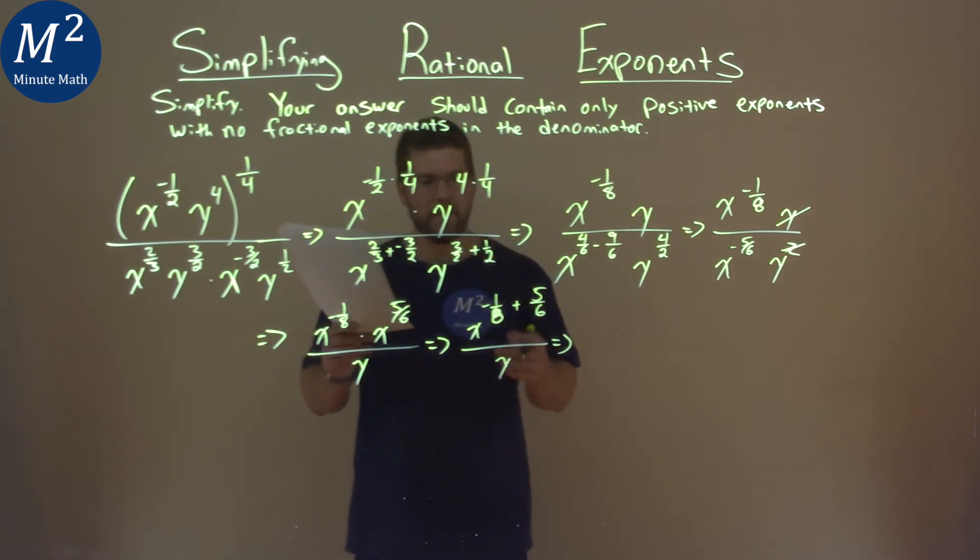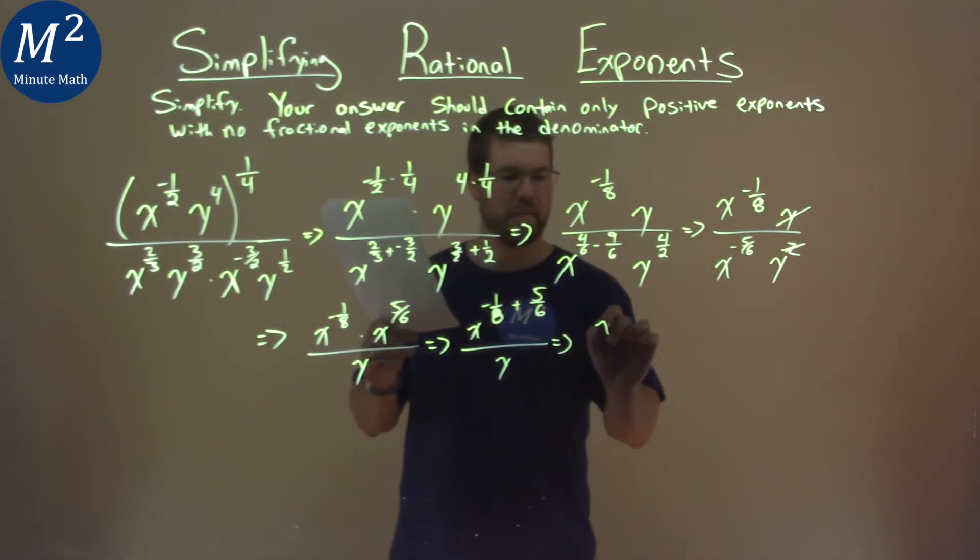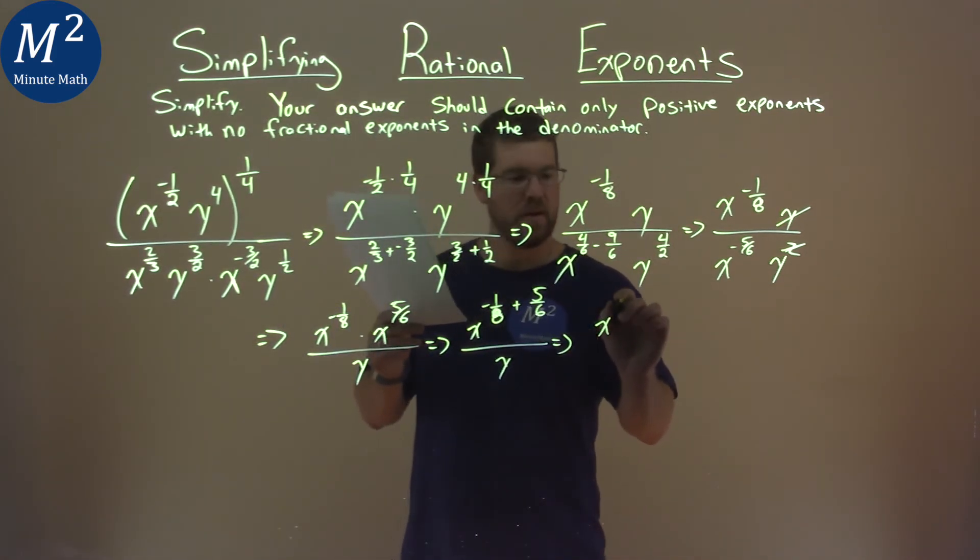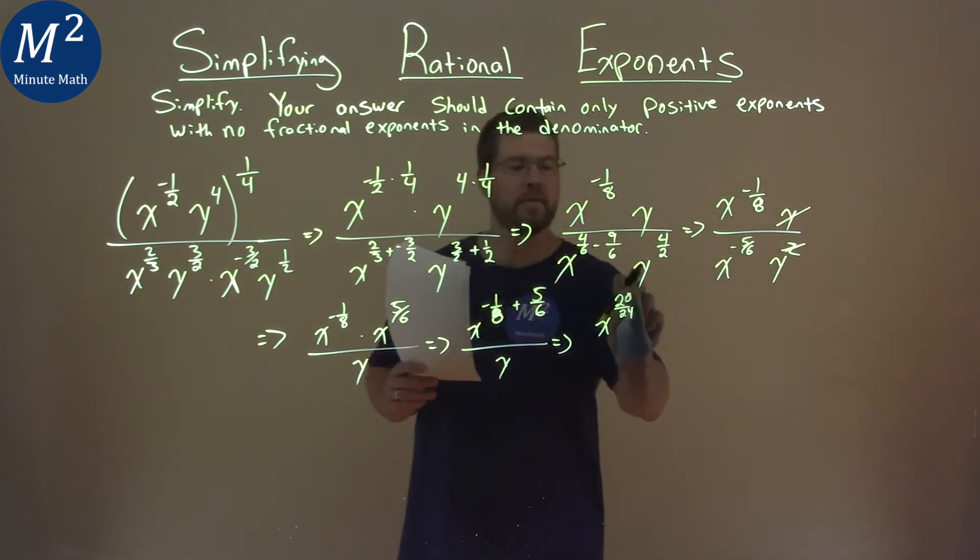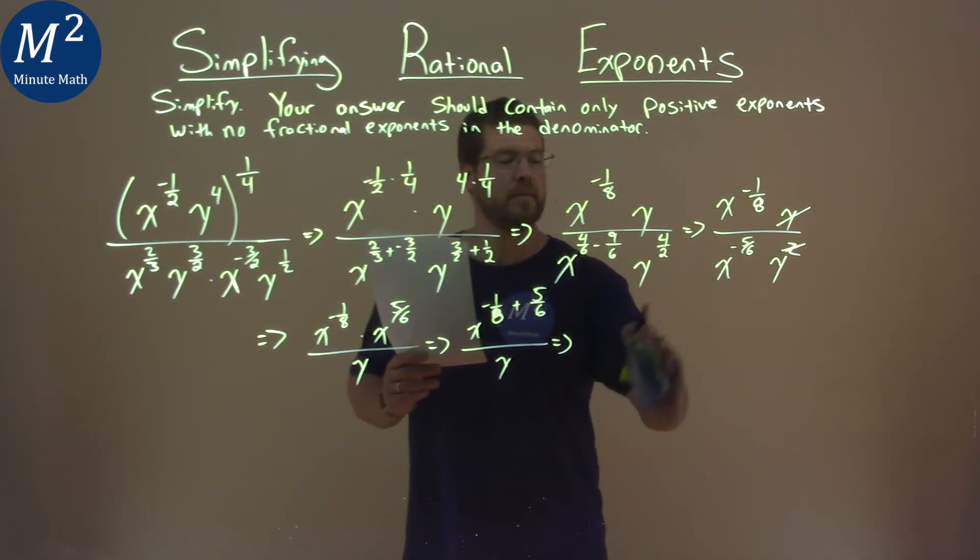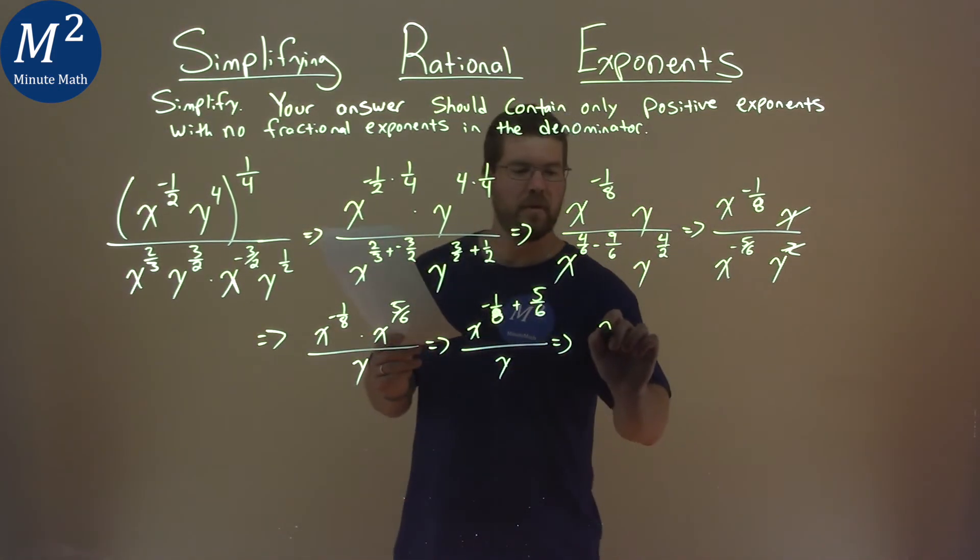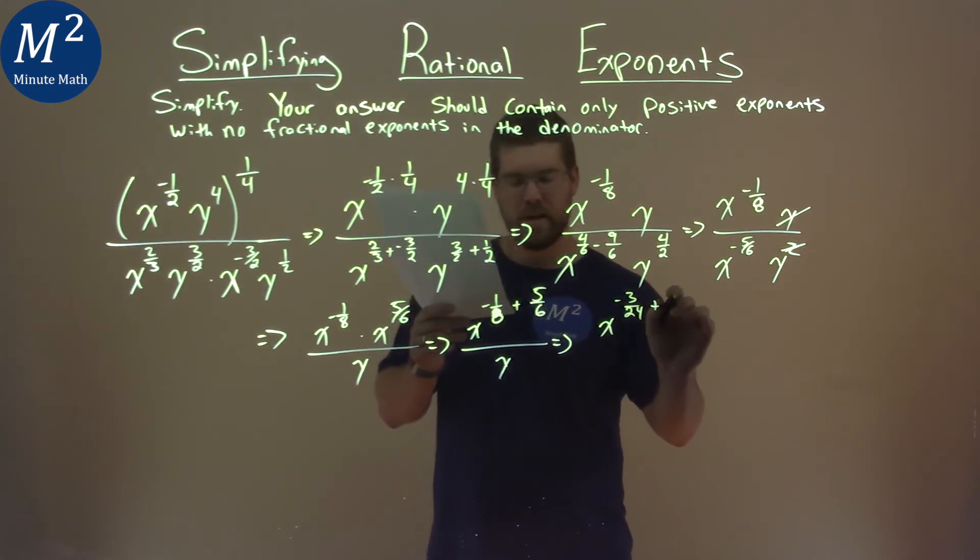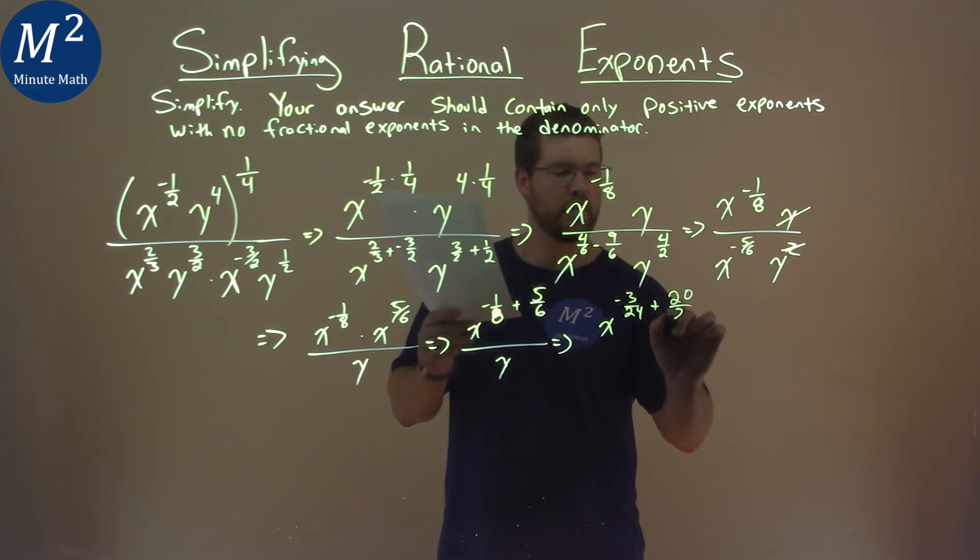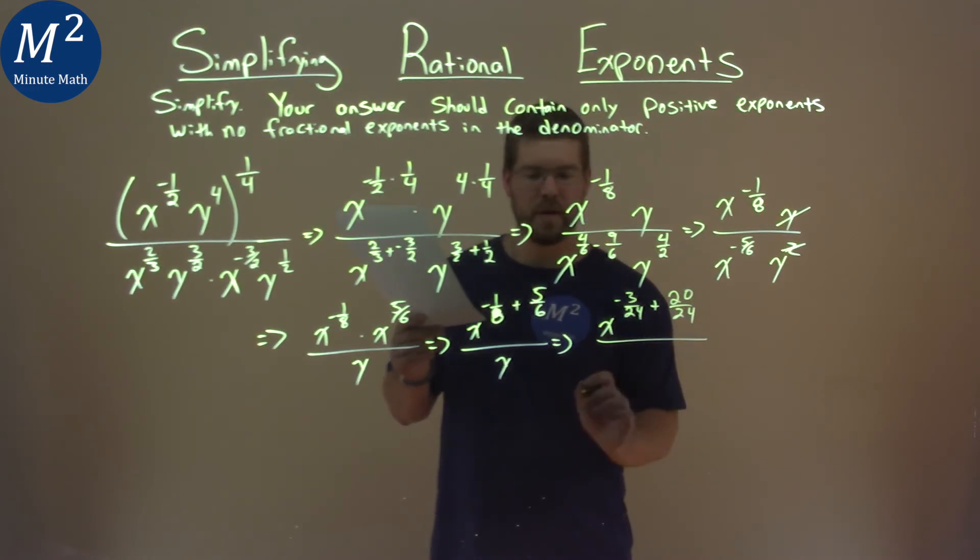Finding a common denominator here. We have x to negative three over 24, that's negative one-eighth, and we're adding a positive 20 over 24, the five-sixth power, over y.